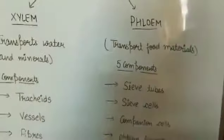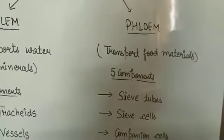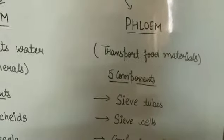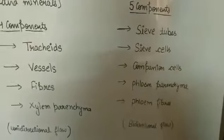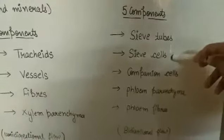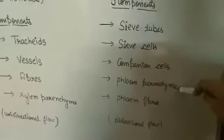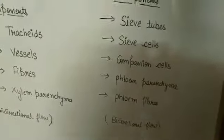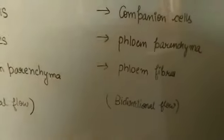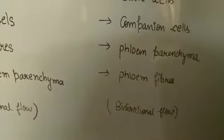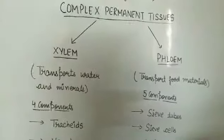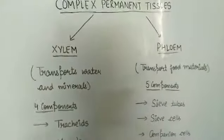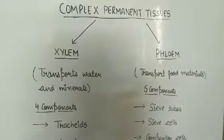Phloem is responsible for the transportation of food material from the leaves to the various parts of the plant. Phloem has five main components, including sieve tubes and sieve cells. Phloem can transport food components both upward and downward — from the leaves in either direction. This is the key difference between xylem and phloem complex permanent tissue.